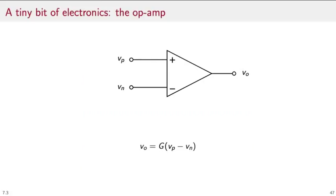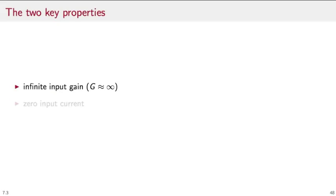At the heart of both digital to analog and analog to digital converters is a circuit called the operational amplifier, or op-amp for short. The op-amp has two inputs, the inverting input and the non-inverting input, and one output. The input-output relationship is that the voltage at the output is equal to the difference between the voltages at the inverting and non-inverting input times a gain factor. We idealize the op-amp by saying that it has infinite input gain and zero input current.